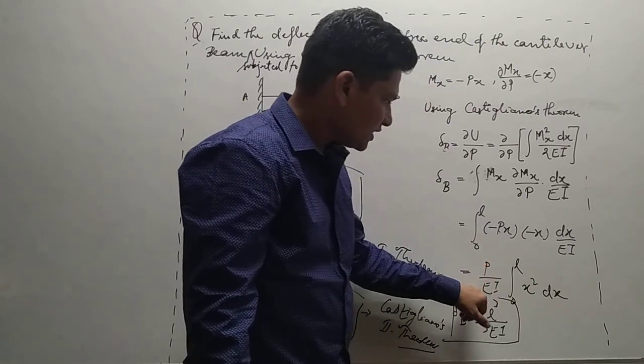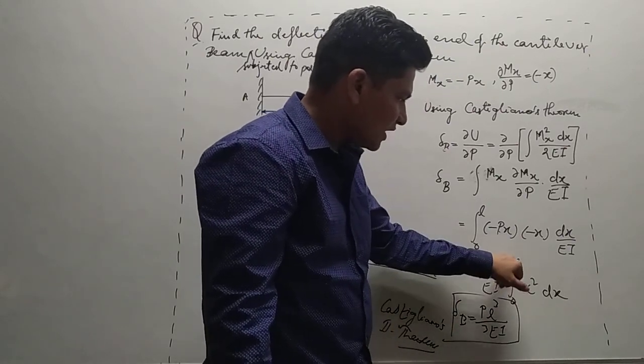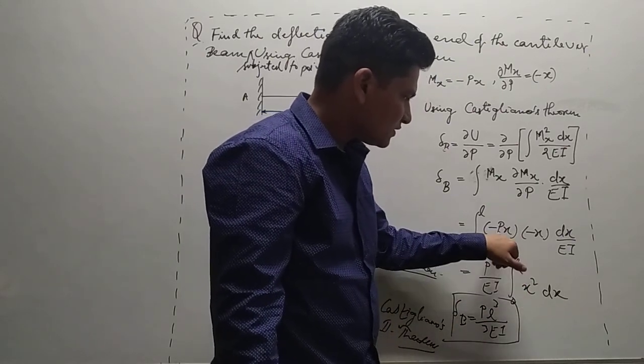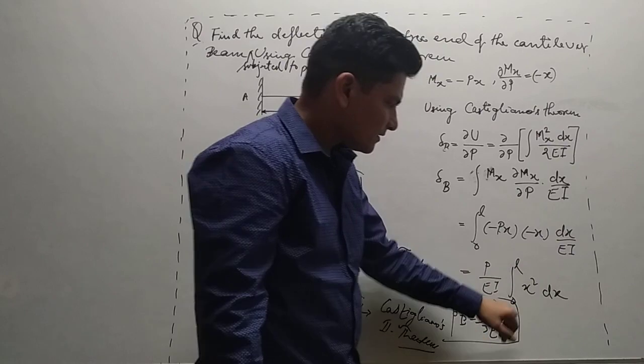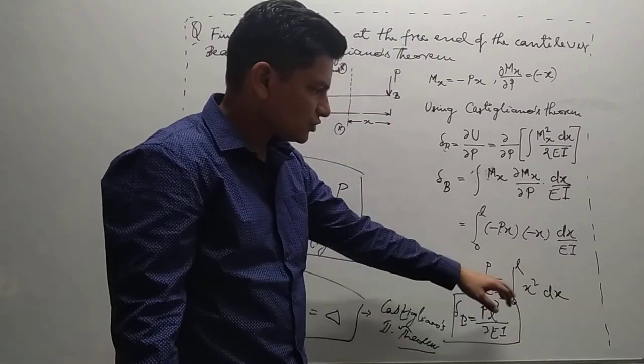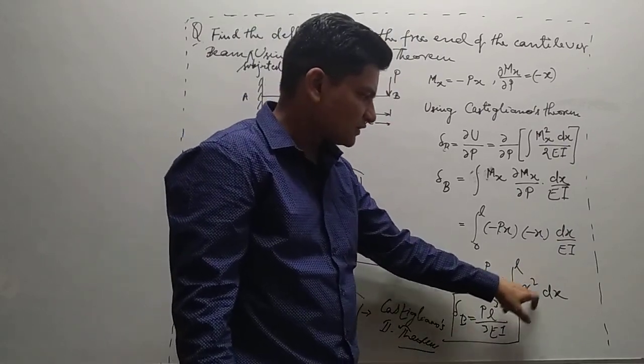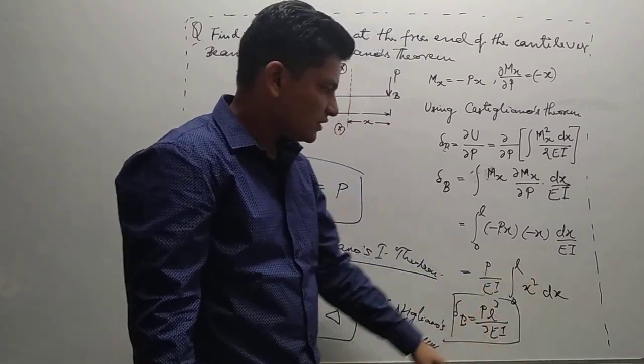This is P upon EI, integrated from 0 to L, and the integration of x² is x³ by 3.